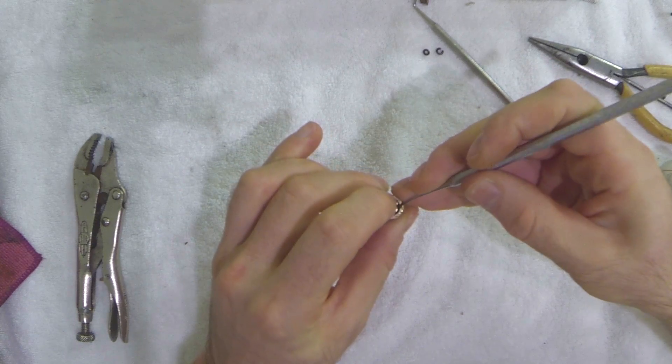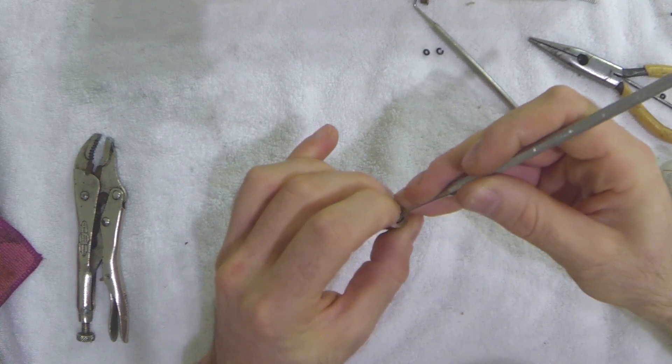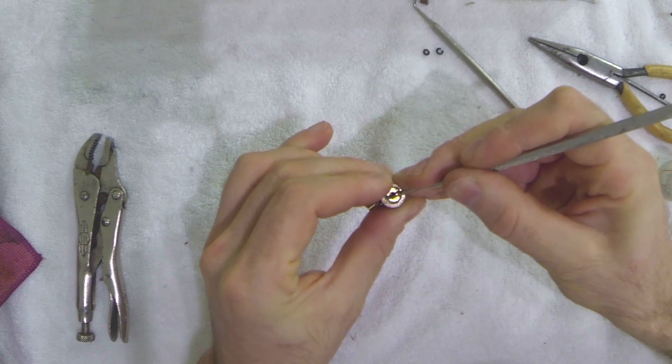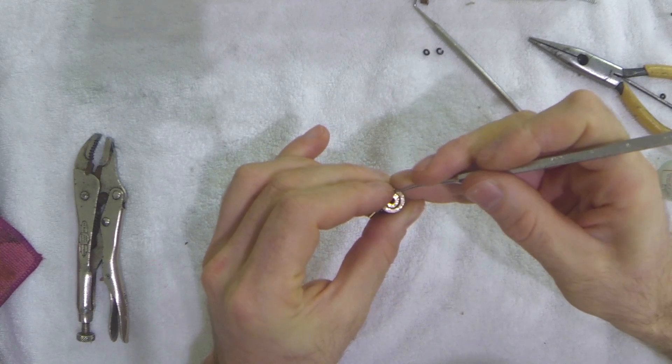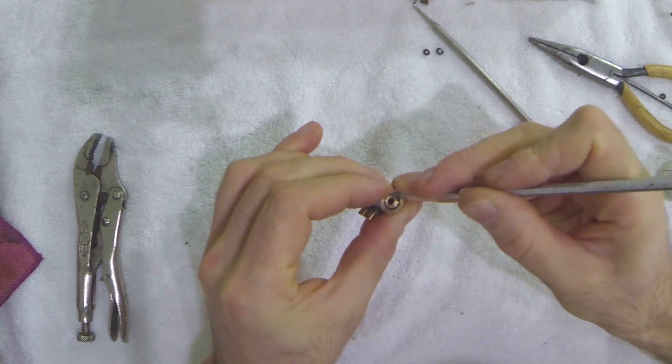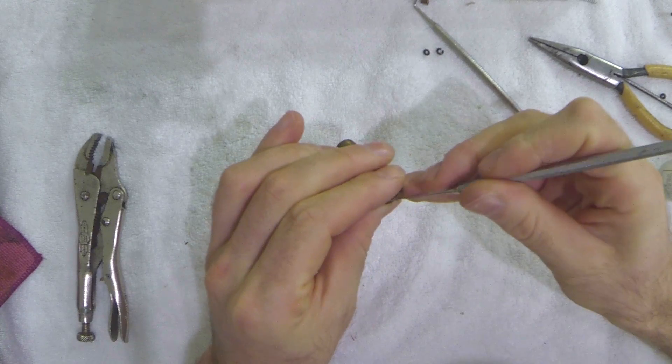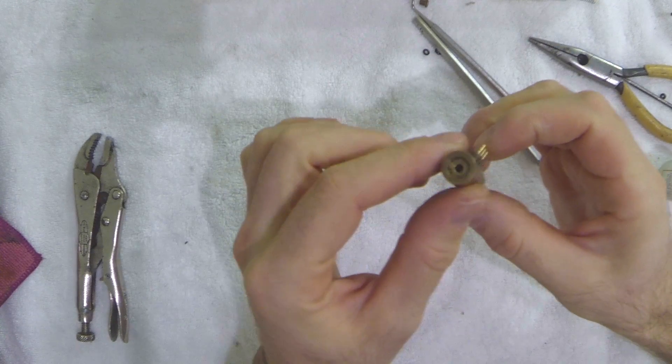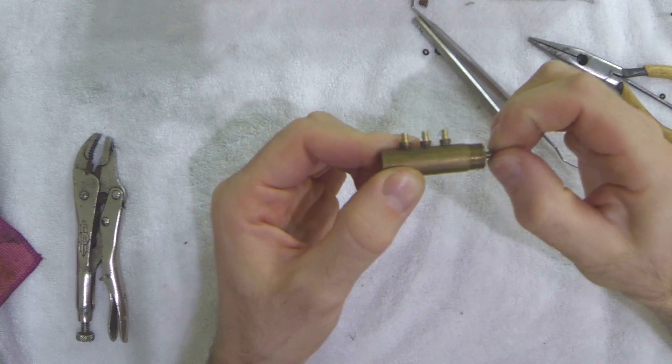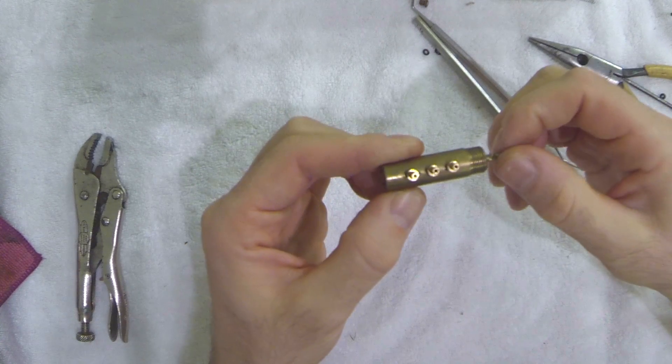Then I push one side in and finally push the end of the clip in. I start on one side and push down all around. There we go, now it's reassembled. I stroke it back and forth and it feels nice and smooth.